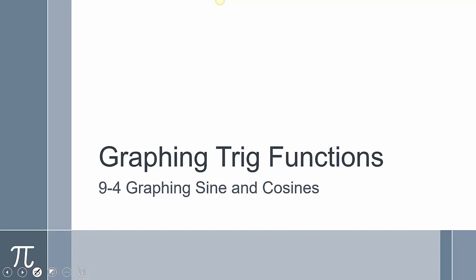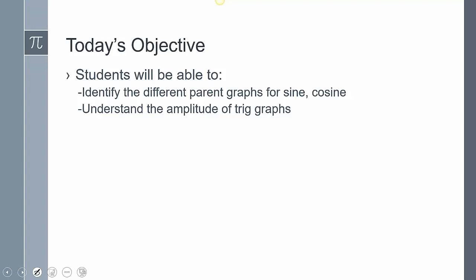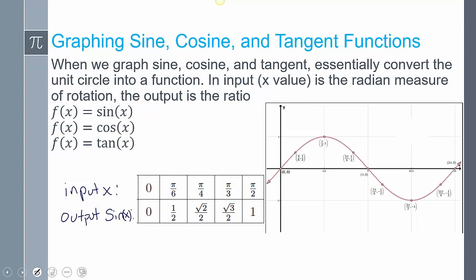This is section 9-4, we're going to be graphing sine and cosine functions. We're going to identify the different parent graphs for sine and cosine, and understand the amplitude of trig graphs. When we graph sine and cosine, and even tangent, but we're not going to talk about tangent today, we're going to punt that forward a little bit.